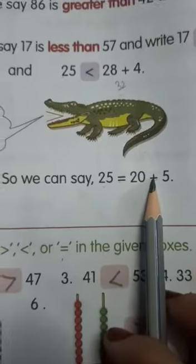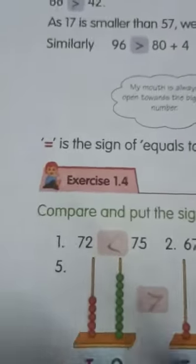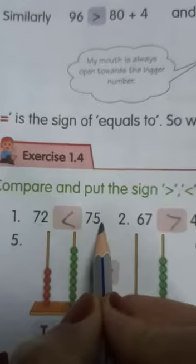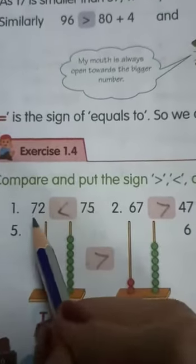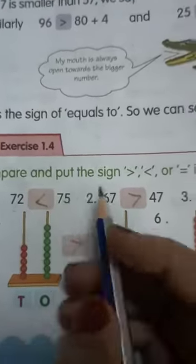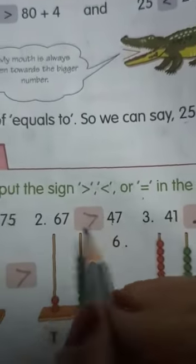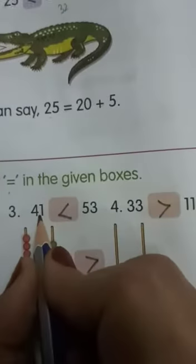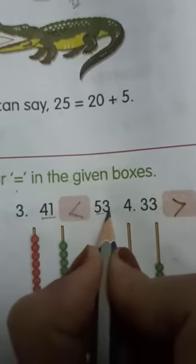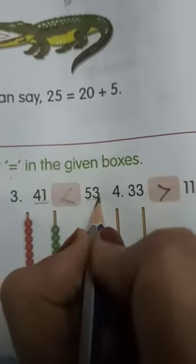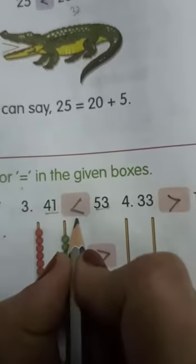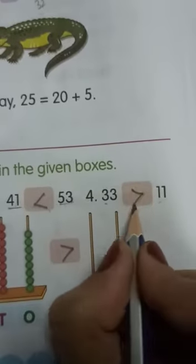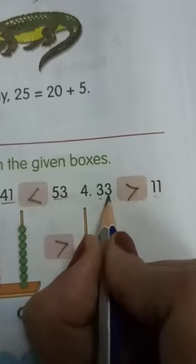Equals to is used when both sides have the same number. Let's start Exercise 1.4 — we have to compare and put the sign: greater than, less than, or equal to. Here 72 and 75: 75 is bigger, so open mouth towards 75. Here 67 and 47: 67 is bigger, so open mouth towards 67. For 41 and 53: 53 is the bigger number, so open mouth towards 53 — you read this as '41 is less than 53'. Here 33 is bigger and 11 is smaller, so open mouth towards 33 — you read this as '33 is greater than 11'.